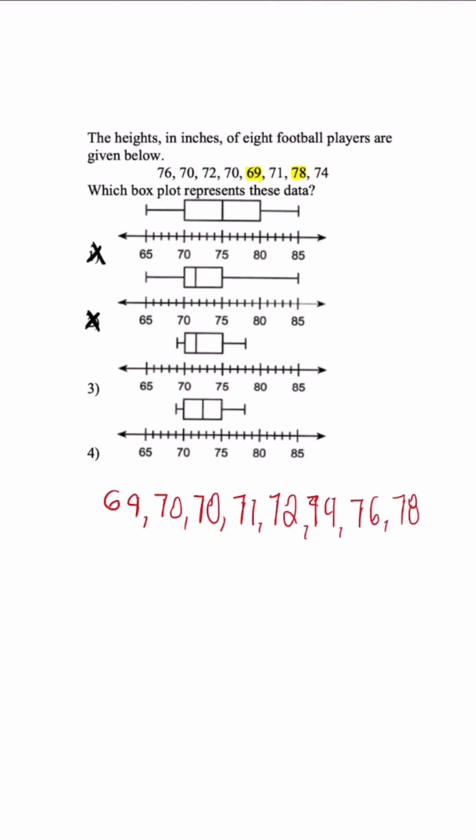Now all we're doing is trying to determine what is the median or middle number. So we'll add these two numbers together and then divide by 2. When we do that, we're going to get a median of 71.5.